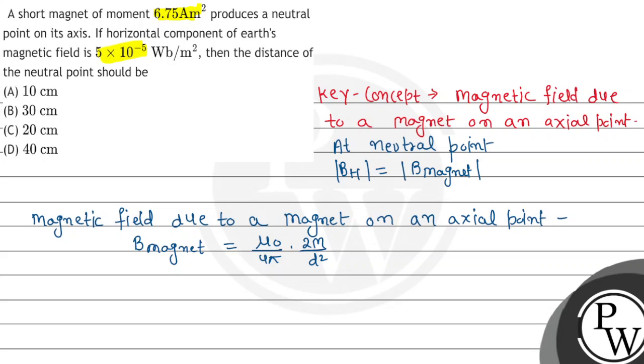Now substituting values: 5 × 10^-5 = μ₀/4π = 10^-7 × 2 × 6.75 / d². So this equals...